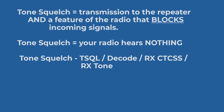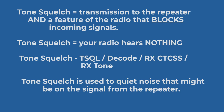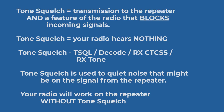Tone squelch is also referred to as TSQL — that's what you'll see in our programmers — D-code, although there's an ENCODE that goes with it, RxCTCSS or RxTone. Tone squelch is used to quiet noise that might be on the signal from the repeater. Your radio will work on a repeater that has tone squelch, even if you don't have tone squelch turned on.